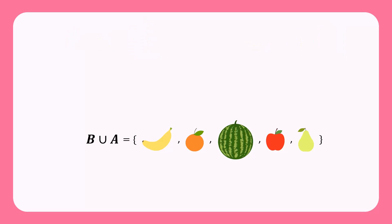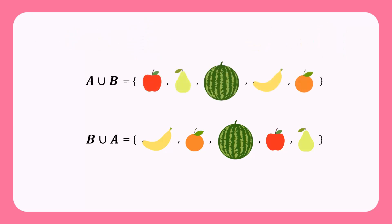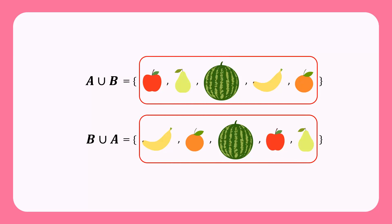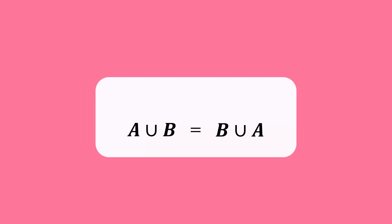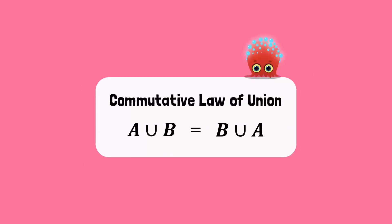Let's bring back A union B. Since the ordering of the elements in the set does not matter, we observe that A union B has the same elements as B union A. Therefore, A union B is equal to B union A. This is called the commutative law of union. It simply means that when we find the union of two sets, the order of the union does not matter.